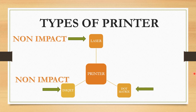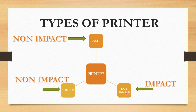Dot matrix printer belongs to the category of impact printer, and the speed of this printer is given in cps, that is characters per second.